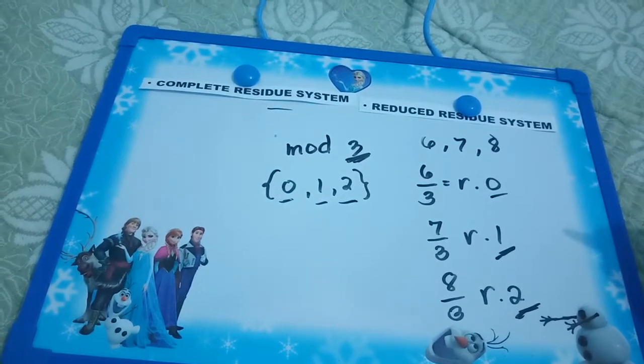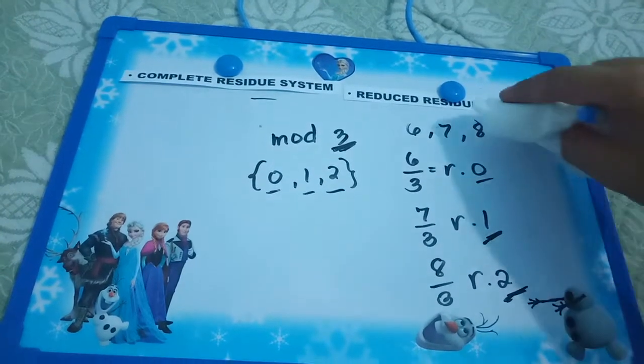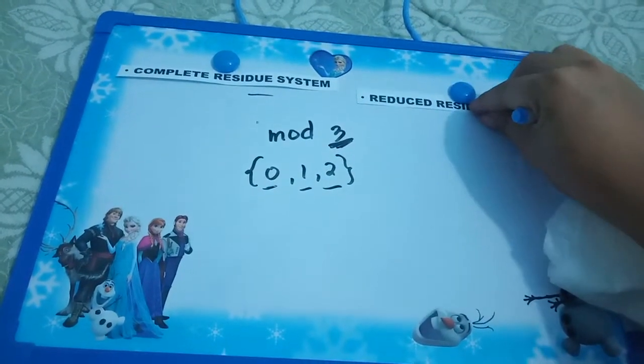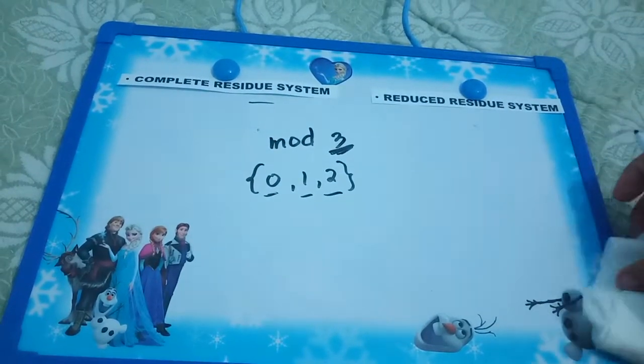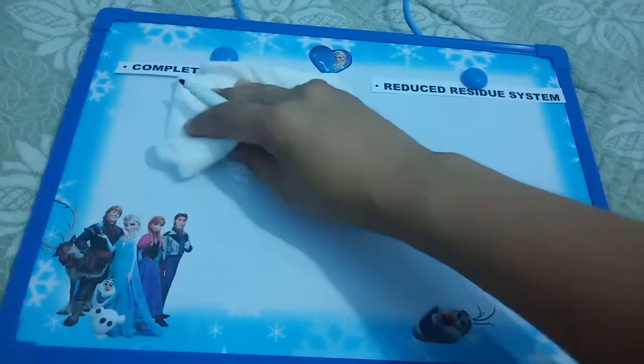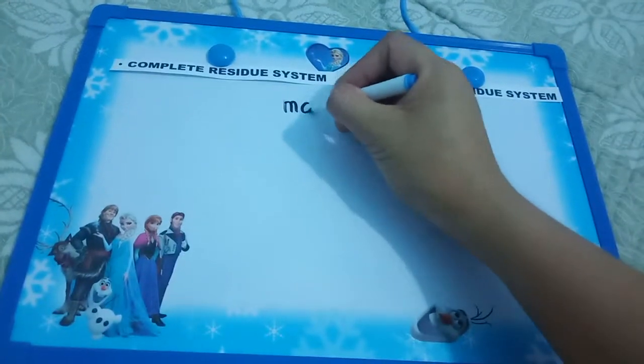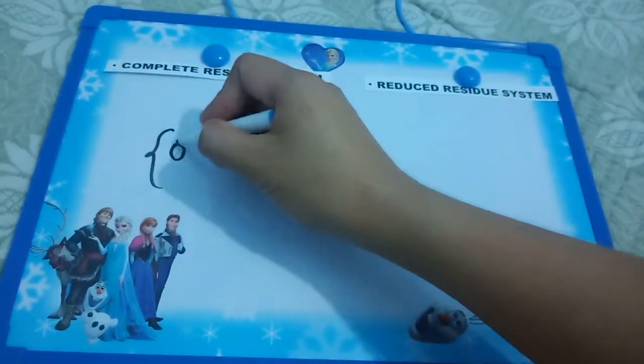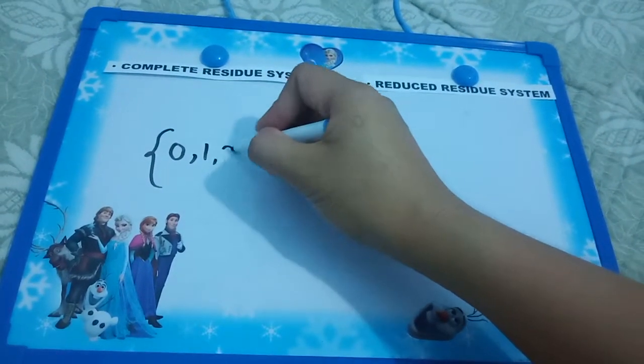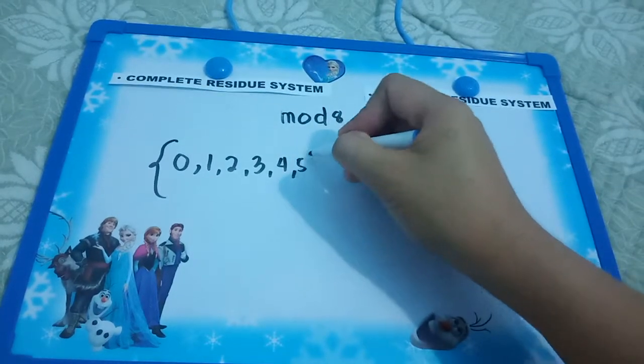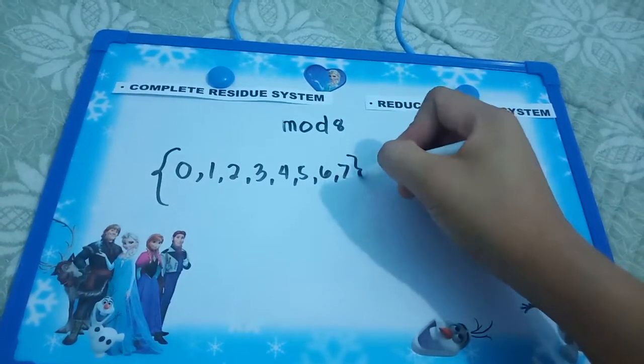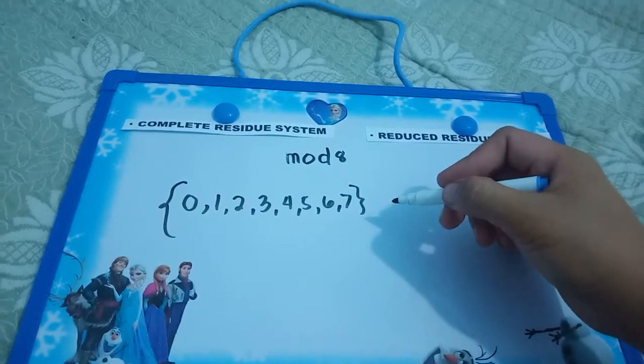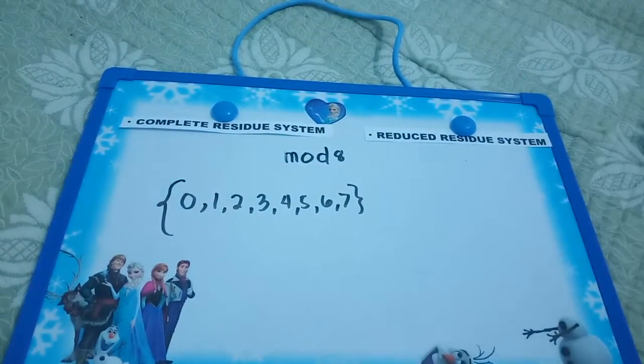On the other hand we have the reduced residual system. What is the difference between the complete residual system and reduced residual system? Let's take another example. We have mod 8. What could be the complete residual system of mod 8? That could be 0, 1, 2, 3, 4, 5, 6, and 7. These numbers are the possible remainders when we divide something by 8.